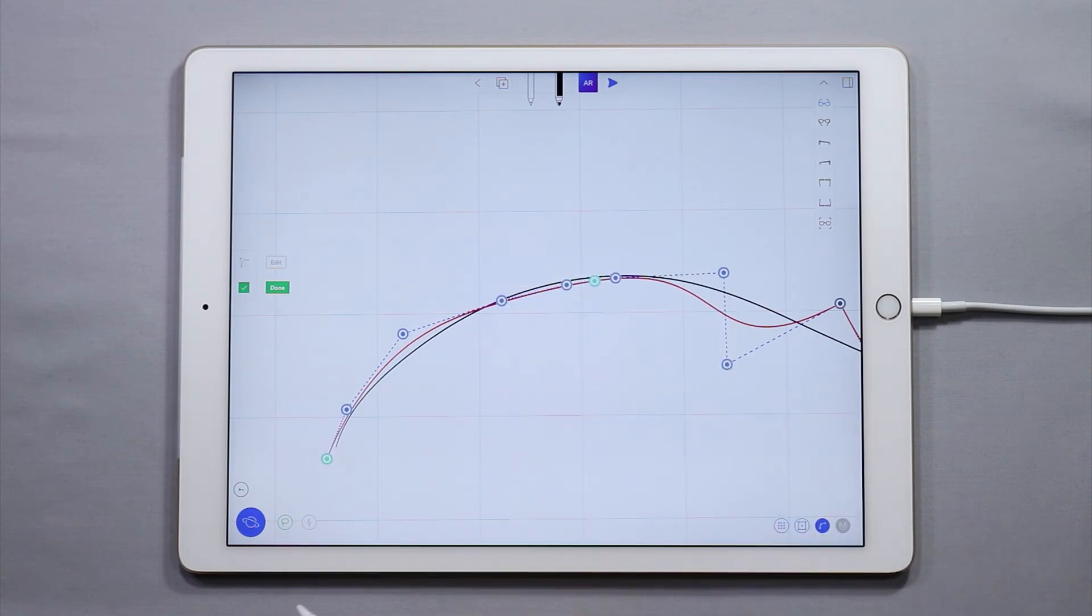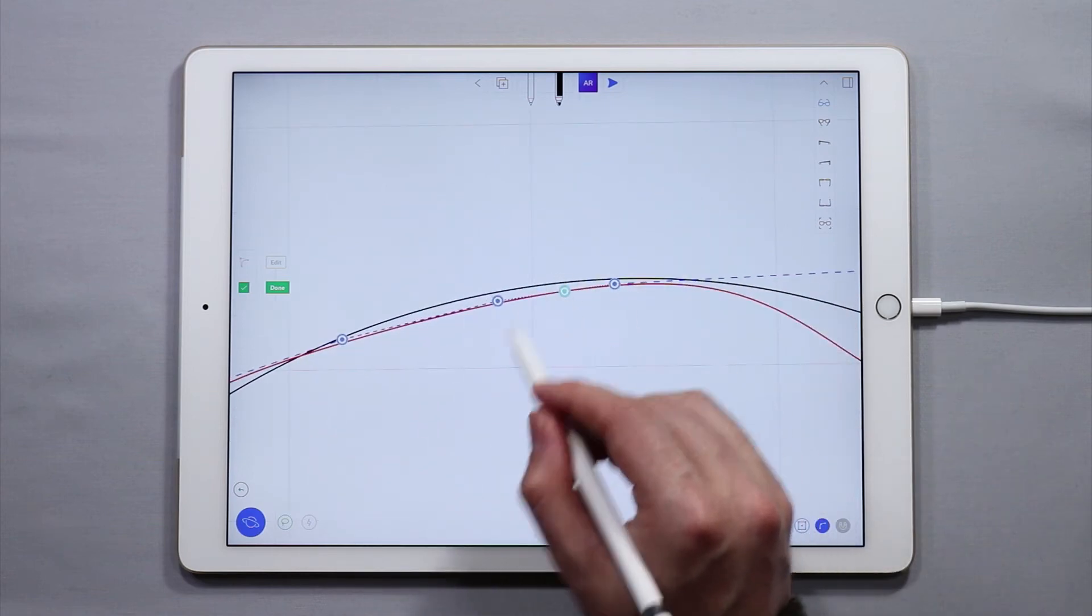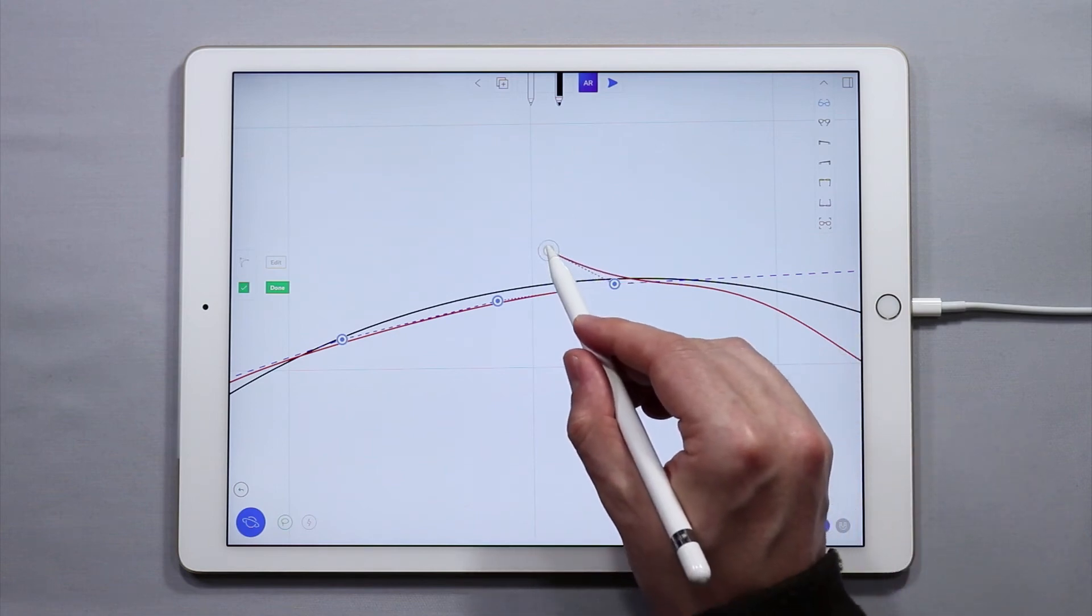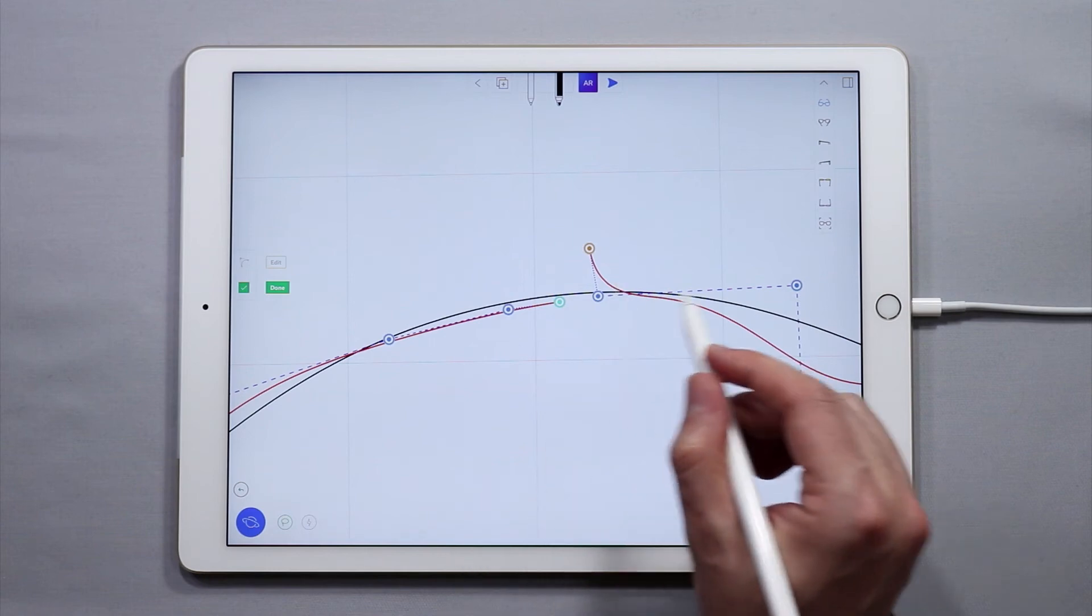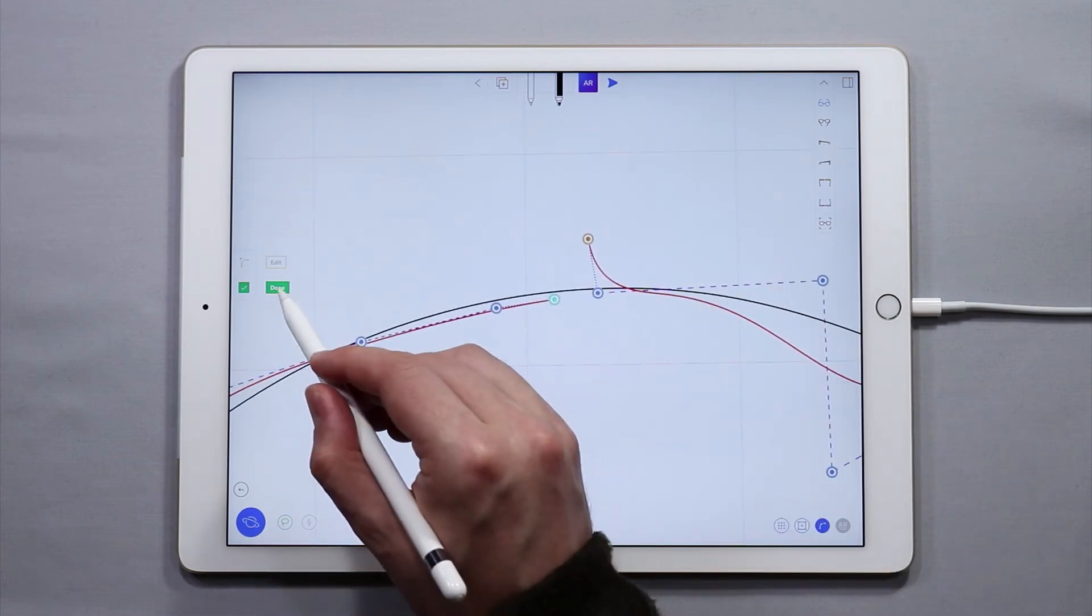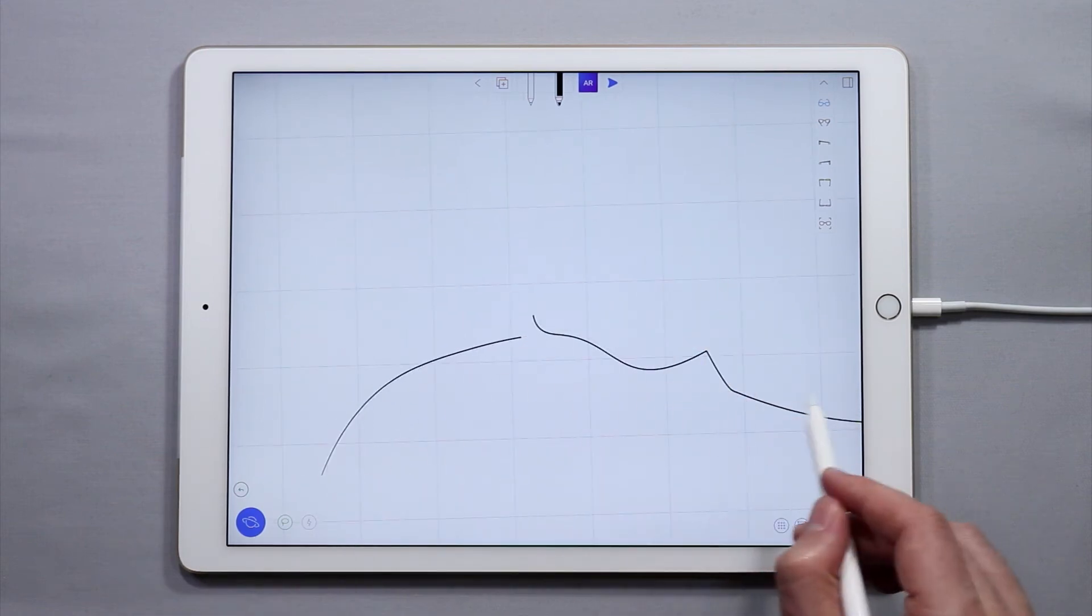I'm going to tap split and you'll see that now we got these new green endpoints. If I tap and drag on one you'll see that I now have a separate curve. I have a space between these and I have a separate curve. So if I tap done you'll see now out of one curve I made two curves.